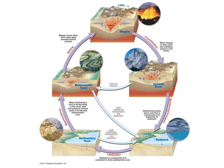Here's the rock cycle. You may be familiar with this from middle school — the three main types of rock: igneous, sedimentary, and metamorphic. Basically, this is a conceptualization of how rocks are formed and how they change from one form to another. Here's igneous rock, here's sedimentary rock, and here's metamorphic rock, and you can change form between one and another.